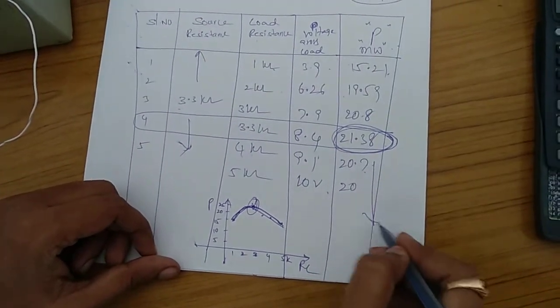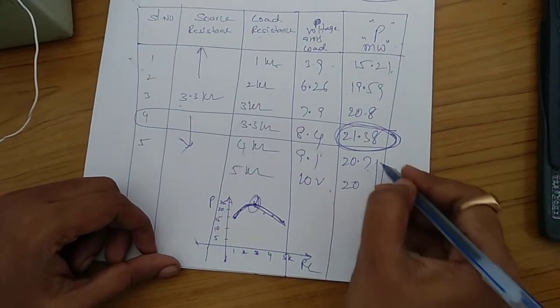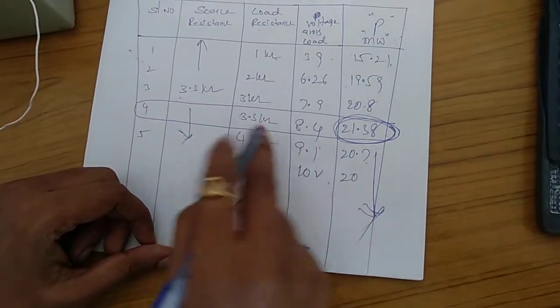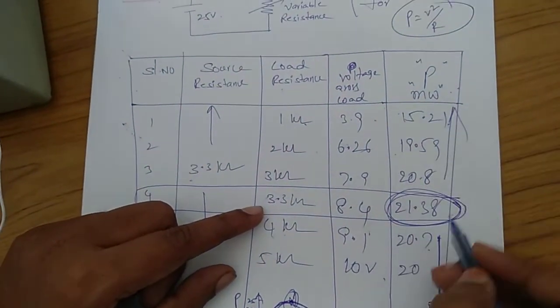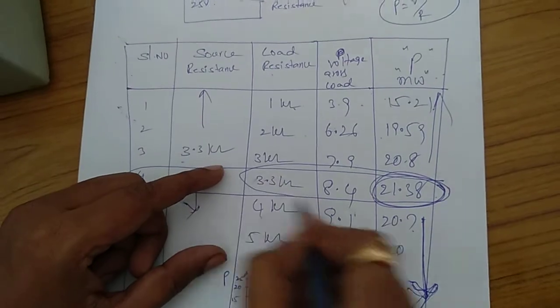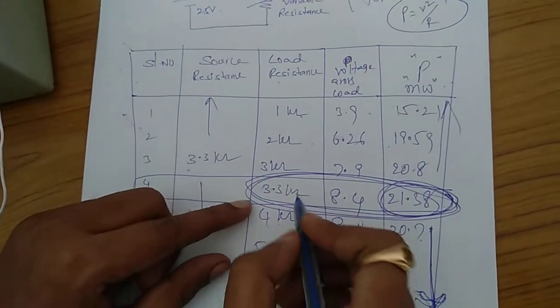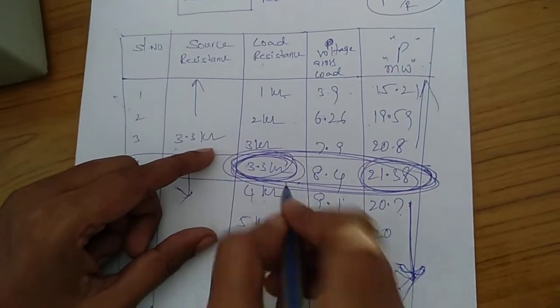And in remaining cases, after increasing the load resistance beyond the 3.3 kilo ohms, the power is reducing again. Before also, the power is less. The only maximum power is achieved when load resistance equals source resistance of 3.3 kilo ohms.